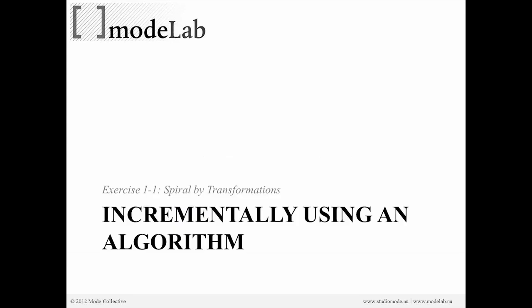The next step we set is that instead of using a predefined algorithm, we're going to create a spiral, but in this case by transformations — not expressions, but transformations. The difference here is that we're going to be finding the spiral incrementally using an algorithm that is composed of a couple of different elements within the processing part of the algorithm.